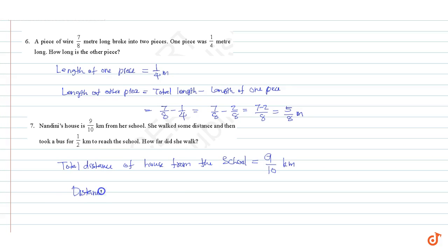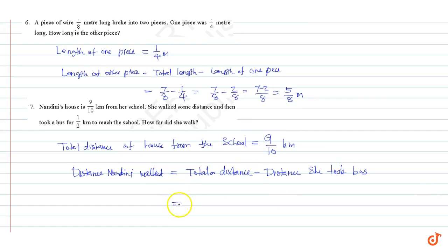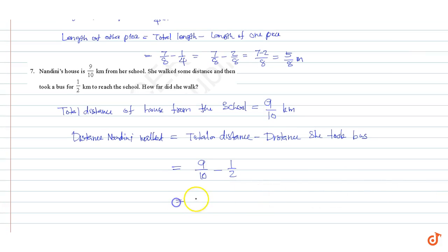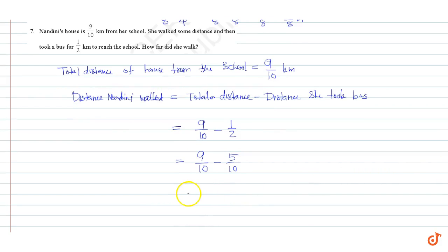Distance Nandini walked is equal to total distance minus distance she took the bus. This is equal to nine by ten minus one by two. Taking LCM as ten, we get nine by ten minus five by ten, which is equal to four by ten, equal to two by five kilometers. These are our answers.